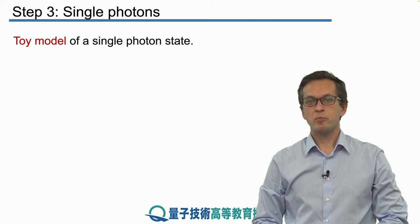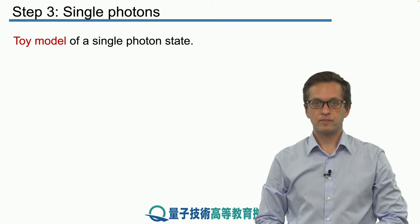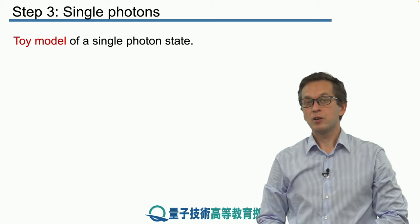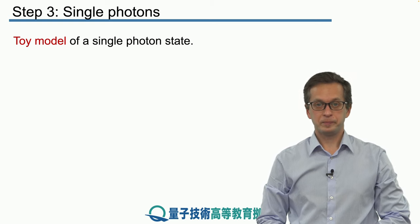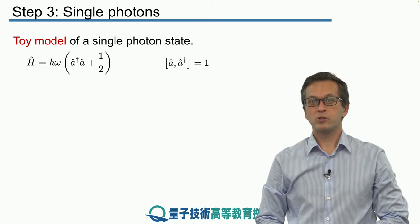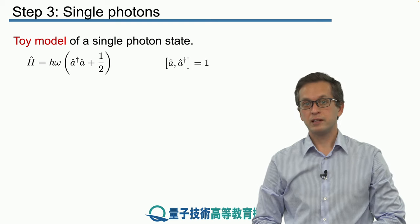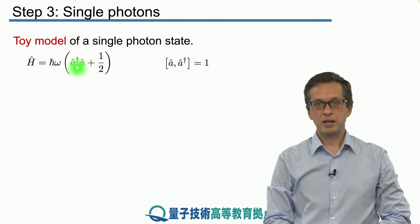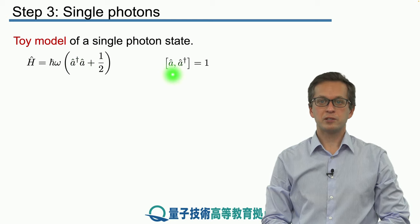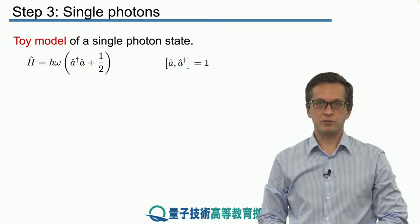Let's introduce a toy model of a single photon state. Why this is a toy model we will explain at the end of this step. But for now we're just going to consider again our Hamiltonian for a single mode electric field given by this expression where the creation operators follow the usual commutation relations.